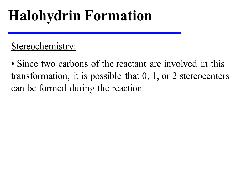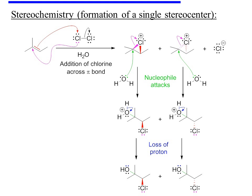Since two carbons of the reactant are involved in this transformation, it is possible that no stereocenters will be formed during the reaction, as in our previous examples. But it is also possible that one or even two stereocenters may be formed during the course of the reaction. Let's now turn our attention to a specific example that leads to the formation of a single stereocenter.